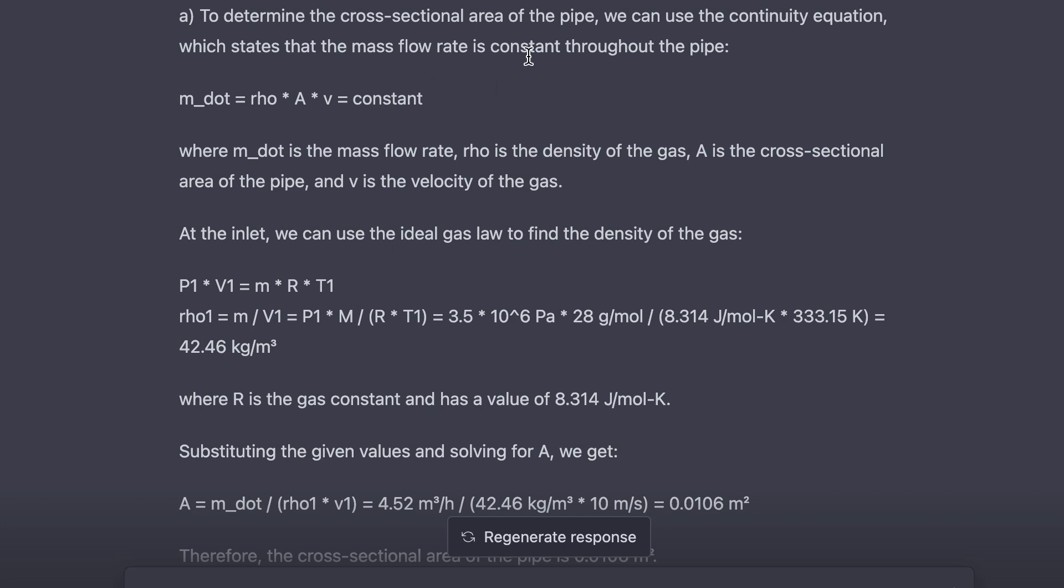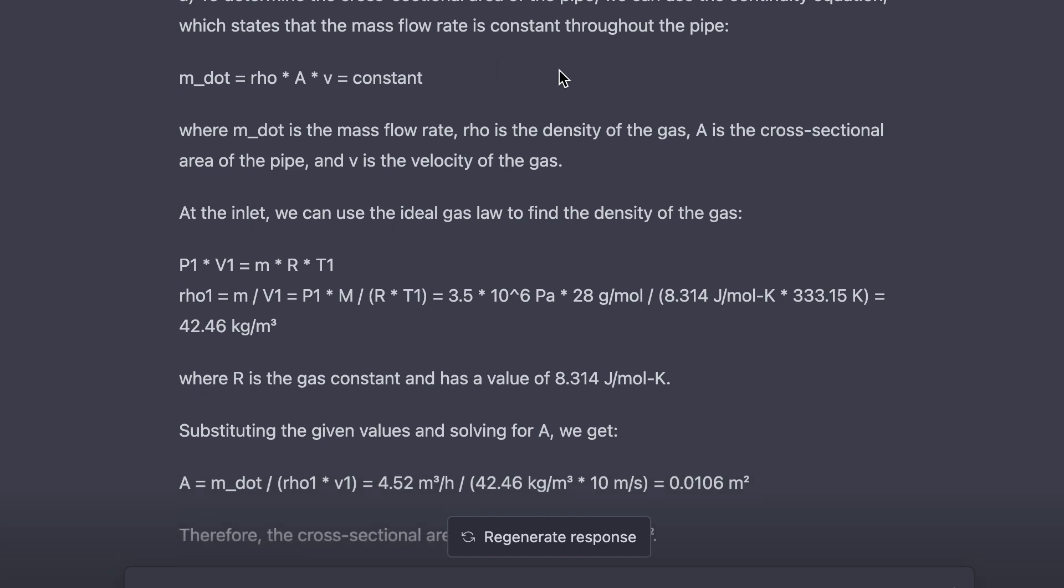It states the mass flow rate is a constant through the pipe. That's correct as well. And it goes ahead and says that the mass flow rate equals the density times the cross-sectional area times the velocity, which equals a constant. This is also correct.